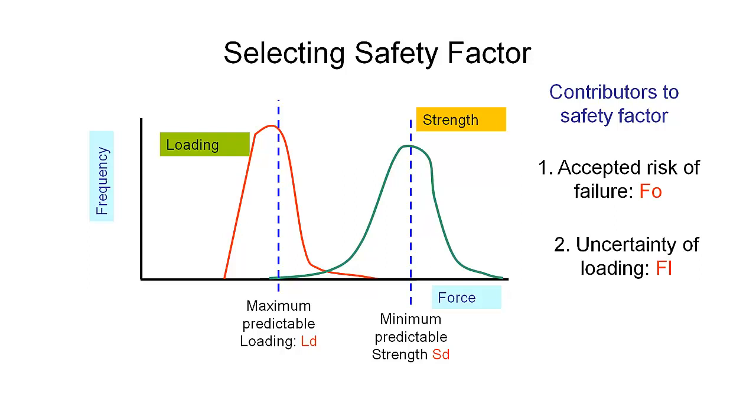The second factor we need to consider is how much uncertainty we have in the amount of load that's going to be applied. So what we're talking about here is the distance or the variation from our maximum predictable loading up to the end of this tail here. So what is the size of this range here? Is it going to be really big and is there going to be a lot of variation in the load? Or is it going to be really small with minimal variation in the load?